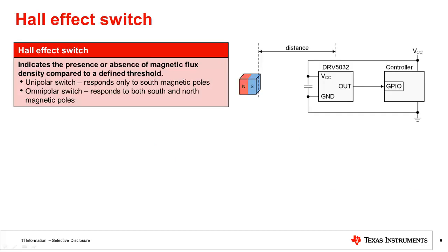Hall effect switches indicate the presence or absence of magnetic flux density compared to a defined threshold. Unipolar Hall effect switches only respond to this direction of magnetic field and have a BRP that's greater than zero. With most industry devices, a positive B field is defined as when a south pole is brought close to the top of the device. This means that once a magnet is moved away, the sensor returns to its off state and brings the output to either a high voltage or high impedance, depending on the device output. It will have the same response if a north pole is held to the top of the device.